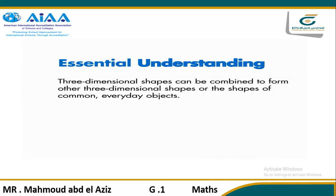The essential understanding for this lesson is: three-dimensional shapes can be combined to form other three-dimensional shapes, or the shapes of common everyday objects. Previously, students used attributes such as the number of vertices, edges, and faces to define three-dimensional shapes. In this lesson, students combine three-dimensional shapes to form real-world objects and larger shapes.